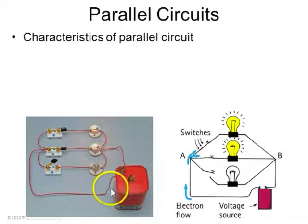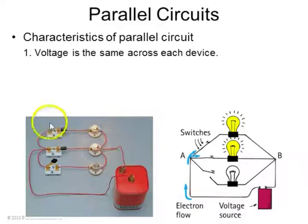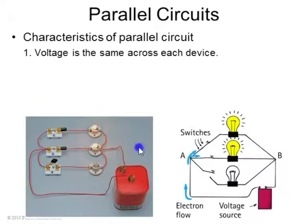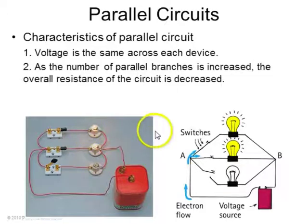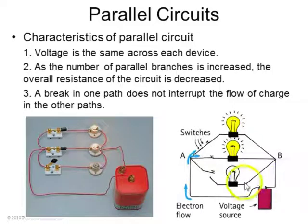A parallel circuit is hooked so that each light bulb is connected directly to the plus terminal and also directly to the minus terminal, and the current splits up across the different branches. If one light bulb is broken or the switch is open, there's still current that can flow through the other light bulbs to get to the minus of the battery. A break in one path does not interrupt the flow of charge through the other paths.